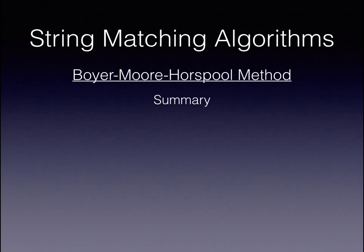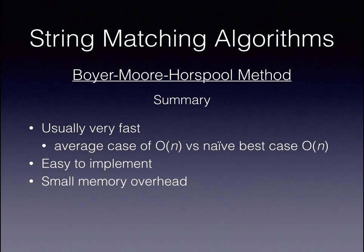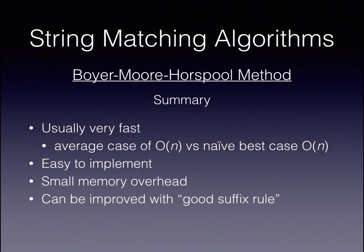To conclude, the Boyer-Moore-Horspool method is a usually very fast algorithm, which has an average case of O(N/M) versus the naive algorithm's best case of O(N). It is easy to implement, particularly compared to more complex algorithms such as Knuth-Morris-Pratt. It has a small memory overhead, and can be improved by the good suffix rule, which comes from the Boyer-Moore algorithm.